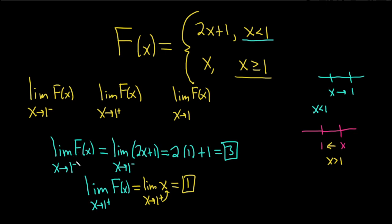So the limit from the left equals 3. The limit from the right equals 1. Because these limits are different, the regular limit does not exist. If these were the same number, then this would be the same answer. But because these results are different, we say the limit does not exist.